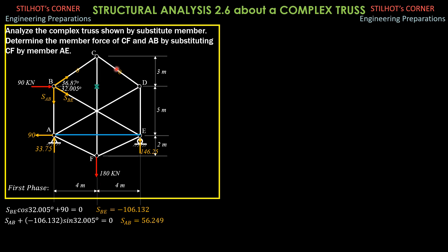Since CD is 0, if we proceed to joint D, there are again two unknown forces at D. In equilibrium, therefore, AD is 0 and DE is 0 — just like when we started at C, where there were two unknown forces only. Here also, there are two unknown forces in equilibrium, so each of these forces would be 0.